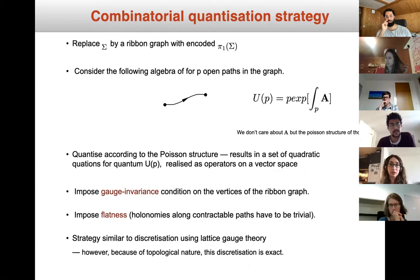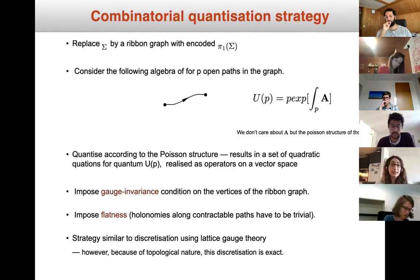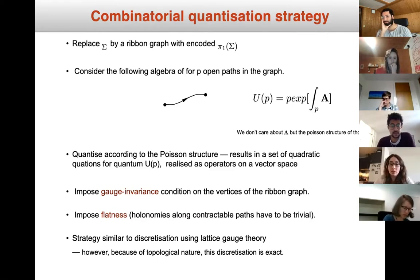Having these tools in hand, I can go to the main goal of the talk: the combinatorial quantization strategy. We replace Σ by a ribbon graph that encodes the first homotopy group of Σ — some ribbon graph made of edges and vertices. The second step is to consider the algebra U_P for a path P, which is essentially the exponential form of the integral. We don't really care about A̅ directly anymore; we just need the Poisson structure.